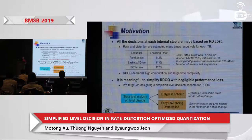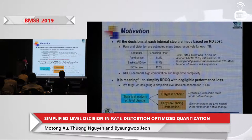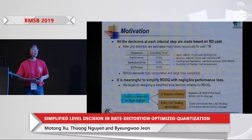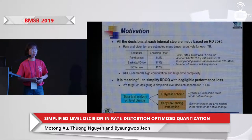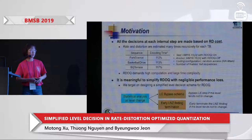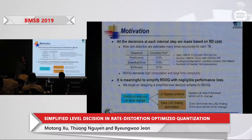This means rate and distortion are calculated, and RD costs are computed several times recursively for each transform block. We tested the encoding time of three sequences encoded using HM 16.15 with RDOQ turned on and compared it against the anchor (HM with RDOQ off). We can see that RDOQ increases encoding time significantly, meaning it demands very high computation and consumes a lot of time.